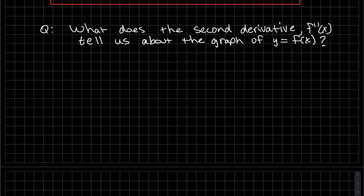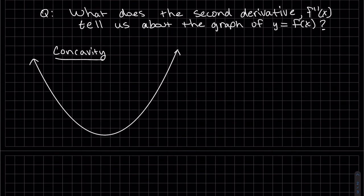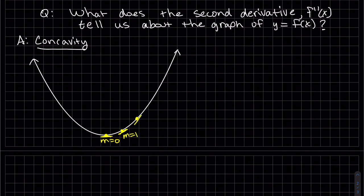Our next question is to look at the second derivative. What does the second derivative tell us about the graph? The answer is concavity. If we have a graph that's concave up and I draw tangent lines, the slope equals zero at the bottom, then moves to slope equals one, then two — getting steeper. So this is a bowl up — F is concave up.